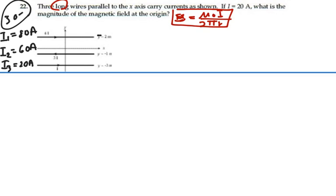We're respectively located at y equal to 2, y equal to negative 1, and y equal to negative 3. And the first current is going to the right, second current is going to the left, and the last current is going to the right.